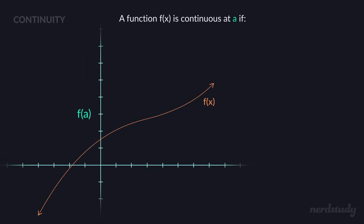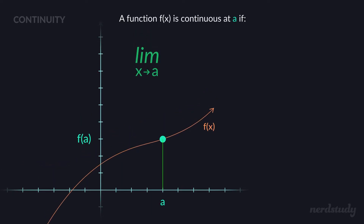Through the use of the concept of limits, we're able to say that if a function f(x) is continuous at a number a, then we know for a fact that the limit as x approaches a for that function is going to equal f(a).